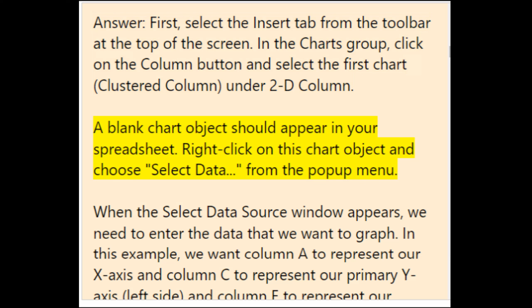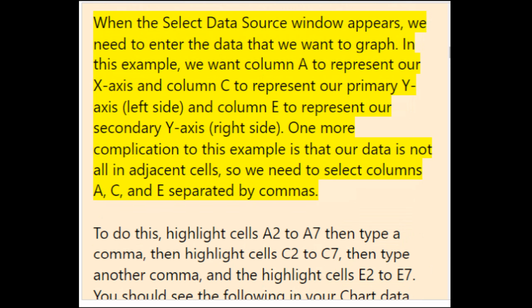When the Select Data Source window appears, enter the data you want to graph. In this example, column A represents the x-axis, column C represents the primary y-axis (left side), and column E represents the secondary y-axis (right side). Since the data is not all in adjacent cells, select columns A, C, and E separated by commas — highlight cells A2:A7, then C2:C7, then E2:E7.